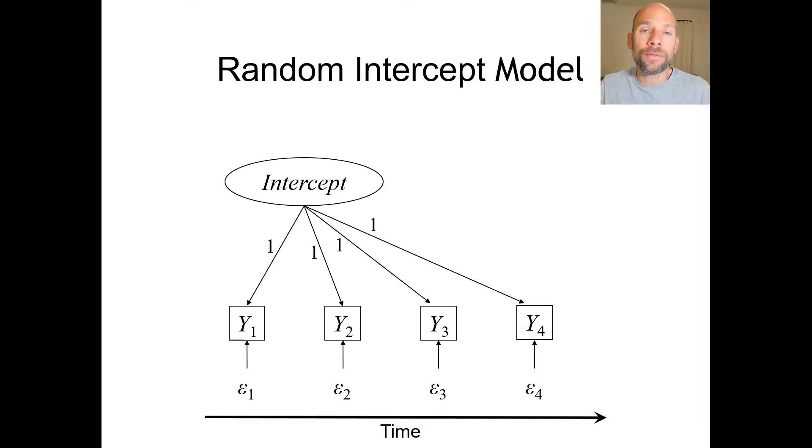For example, true differences between people in intelligence scores or true differences in anxiety scores between people. So between-person differences we are interested in, and we want to separate true or reliable between-person differences from differences that are simply due to measurement error. So measurement error is represented by the epsilon variables here at the bottom.